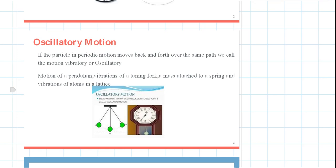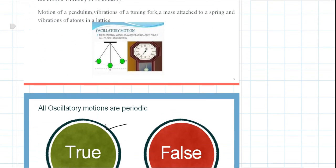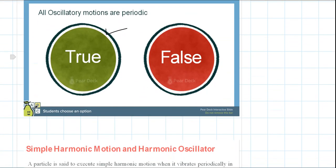This is the oscillatory motion. If a particle under periodic motion is moving back and forth about the equilibrium point, such movements are called oscillatory motion. The oscillatory motion is periodic. All oscillatory motions are periodic, but the converse is not true — not all periodic motions are oscillatory.